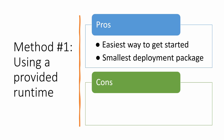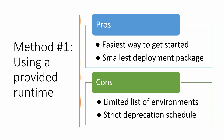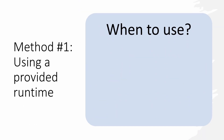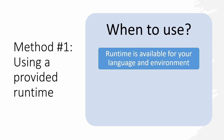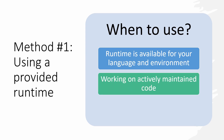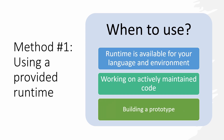The main disadvantages of this method: only several programming languages and environments are supported. For example, there is no provided runtime for the latest version of the Node.js environment. There is also a requirement to follow the runtime deprecation schedule and update functions to new versions of the runtime as old versions are phased out. This method is appropriate when your programming language and environment are supported by a provided runtime, when you are building functions for serverless applications that will continue to evolve and be actively maintained, when you are creating a prototype, or when Lambda functions are new to you.